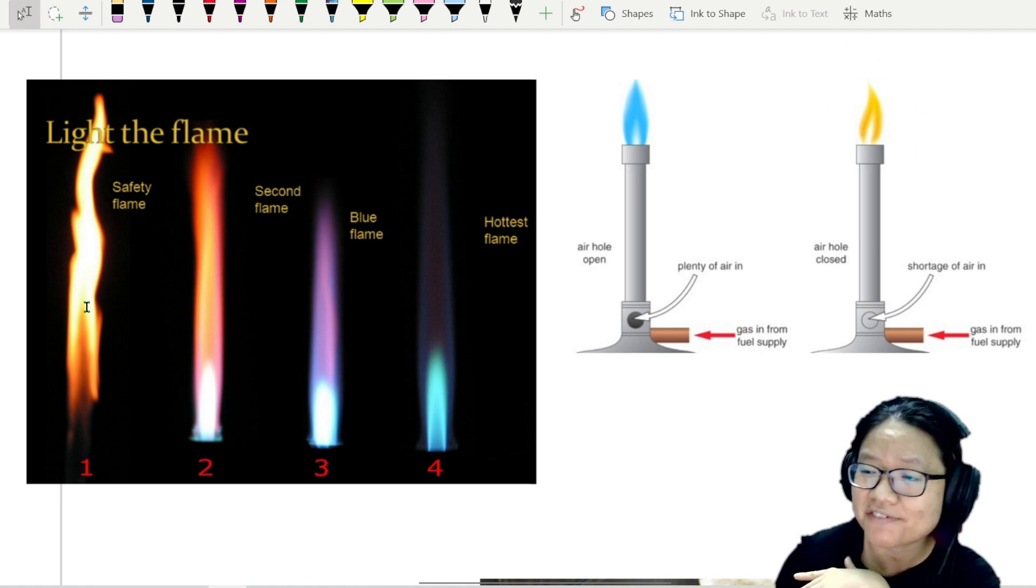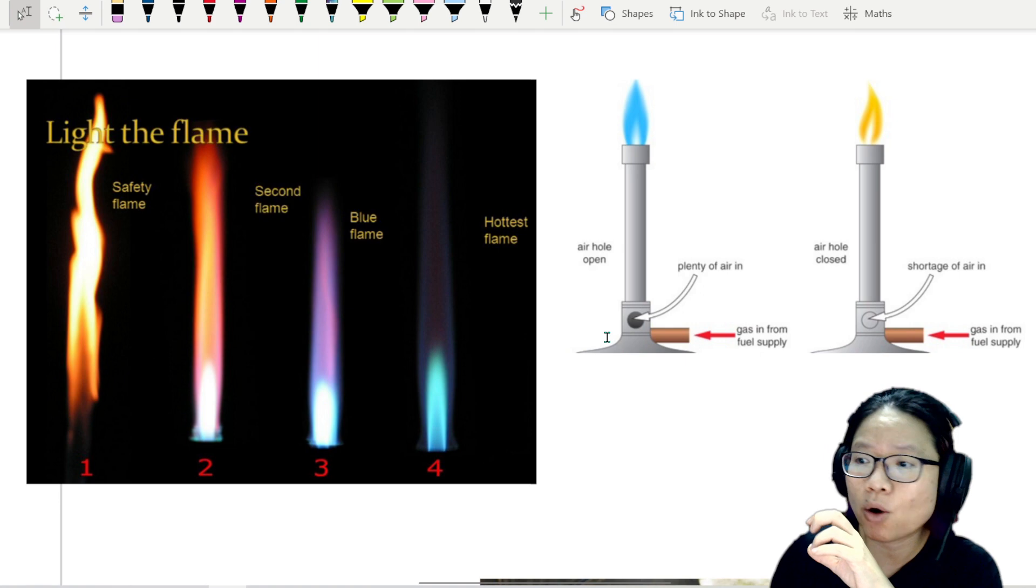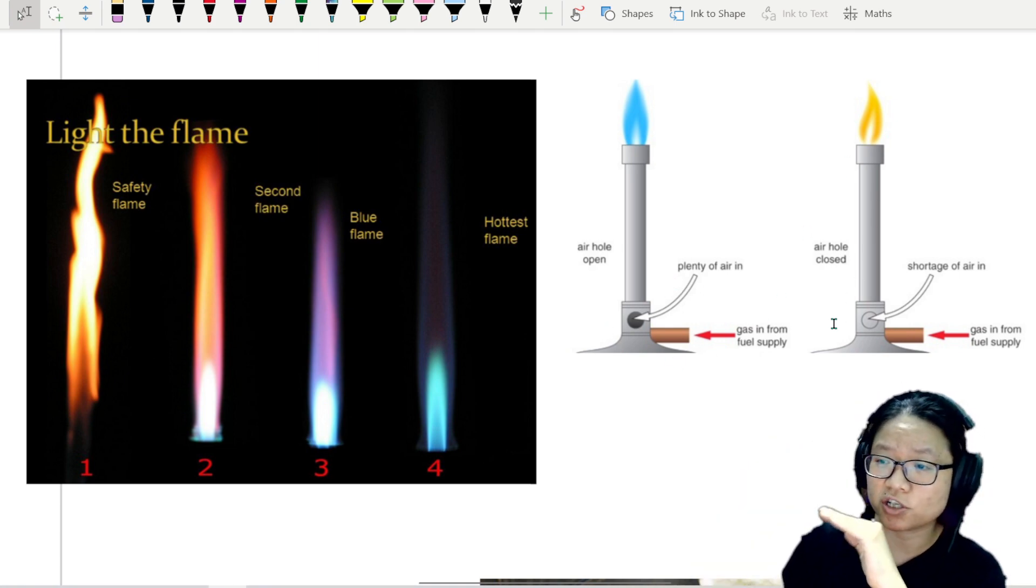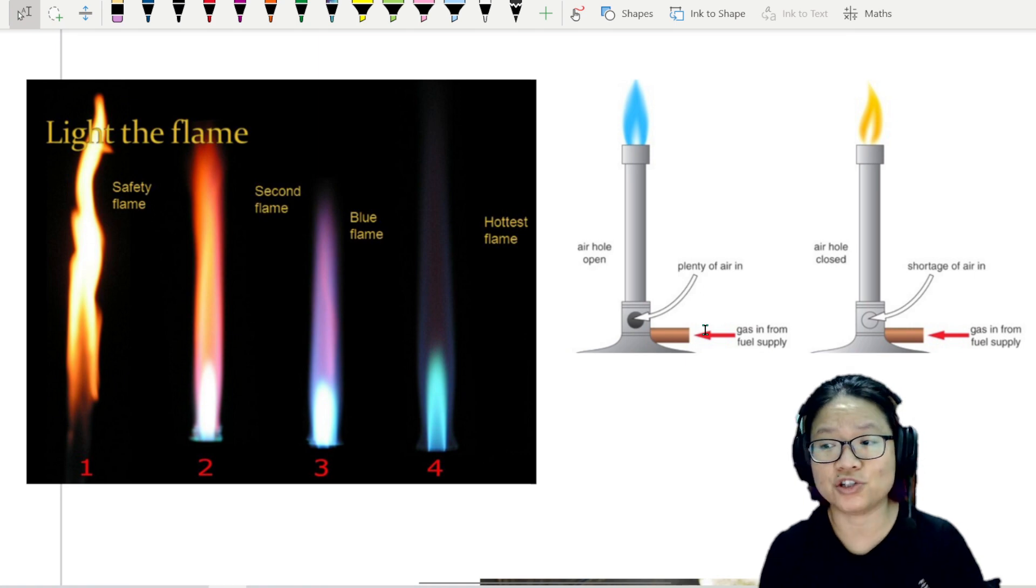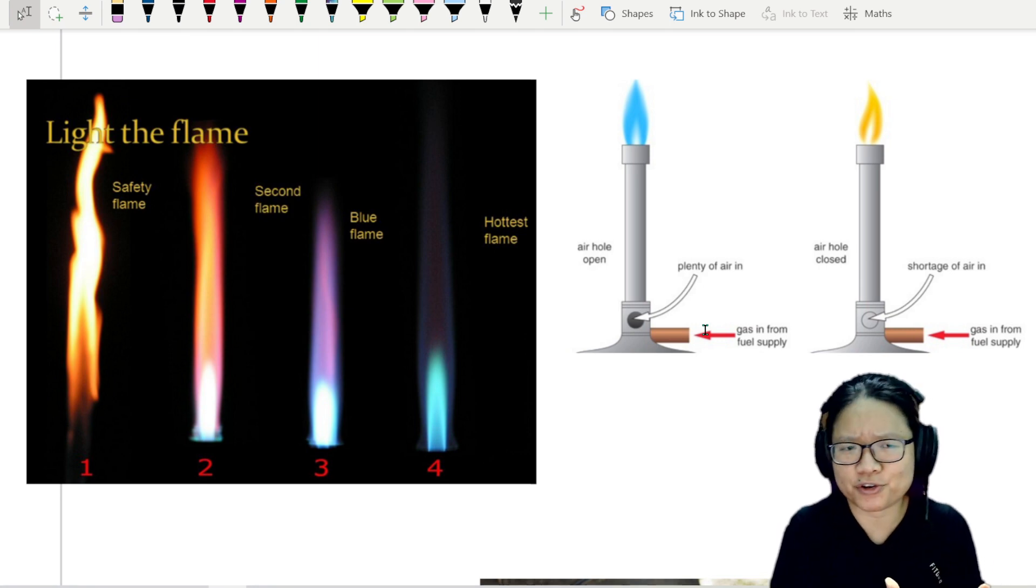We like to call it the safety flame because it's not so hot. What do we do to make the flame hotter? We're going to open up this air hole or this collar, we'll twist it. This allows the oxygen to flow in and we all know oxygen is very combustible. So what happens is that it makes the flame blue and it's a hotter flame for your experiment.